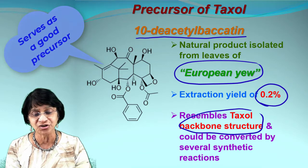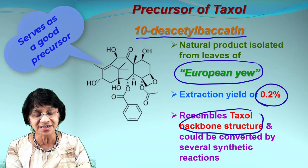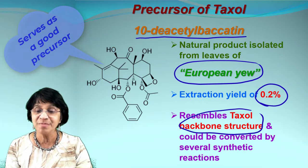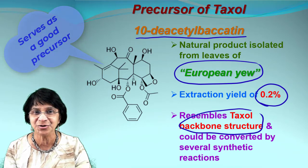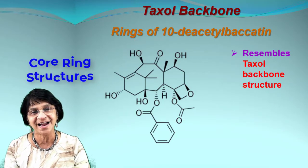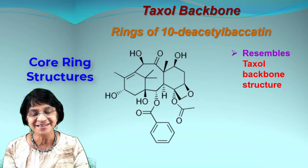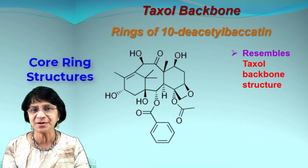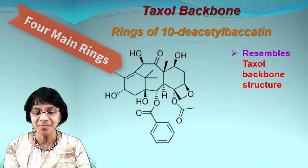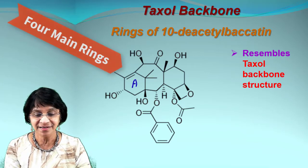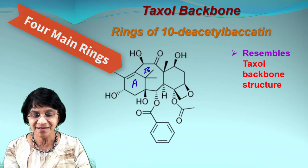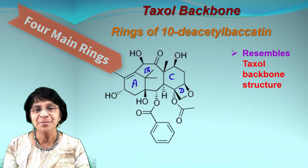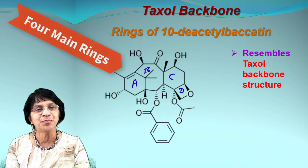The main important thing is that the taxol backbone structure is exactly the same. The only differences are a couple of groups which we'll talk about in a while. If the main backbone structure is still the same, that helps us make sure we can keep the chirality and stereochemistry the same. Now let's find out about the rings present in this deacetylbaccatin, or the taxol precursor. This structure resembles very closely with taxol. There are four main rings: ring A, ring B, ring C, and ring D, a four-membered ring. Each ring has been named based upon the number of carbon atoms and its functional group properties.